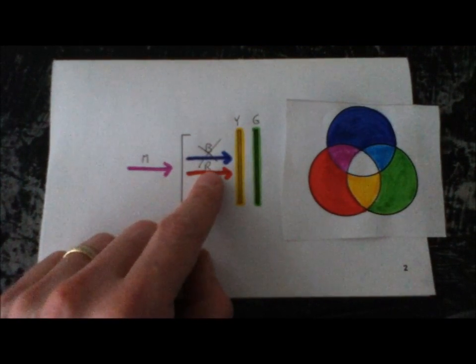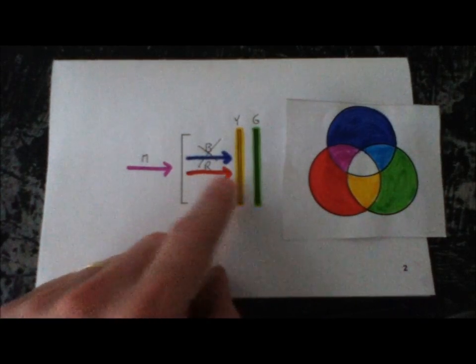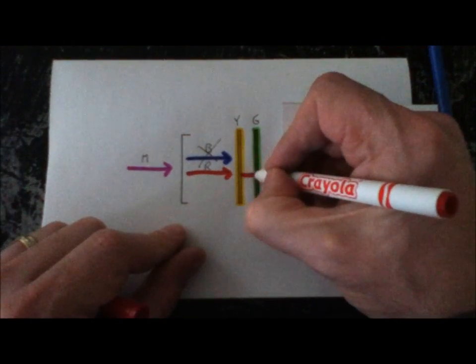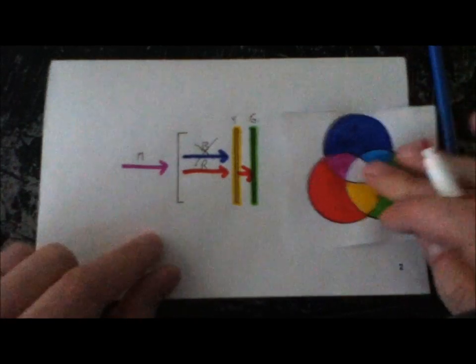The red however, because yellow has red in it, will be able to pass through the yellow filter. So we'll just show that in that fashion.